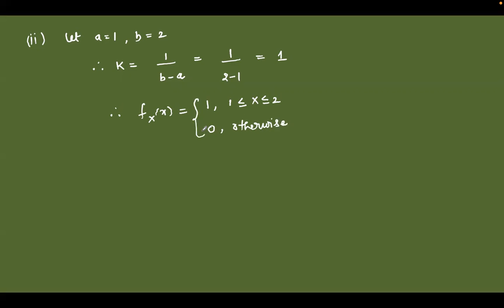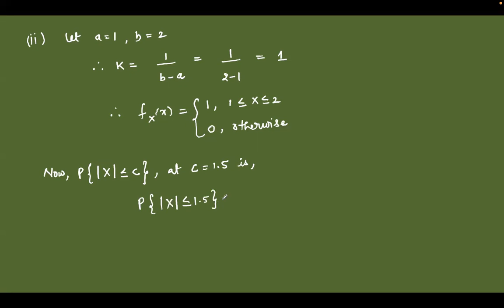Now we need to find the probability of the random variable X as per the question. We need to find P(|X| ≤ c), and the value of c is 1.5. P(|X| ≤ 1.5) can be written as P(−1.5 ≤ X ≤ 1.5), since when a random variable is given in mod it takes both minus and plus values.